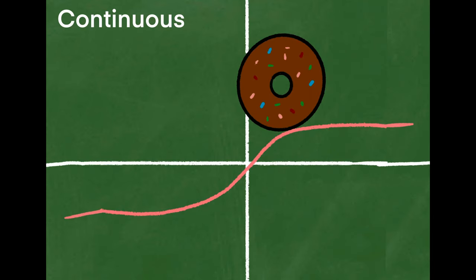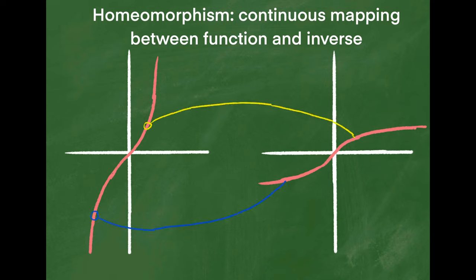Also, the inverse is continuous, meaning that I can smoothly roll down it. All of this means that there's a homeomorphism, or continuous mapping, between every point on f of x and a point on the inverse of f of x.